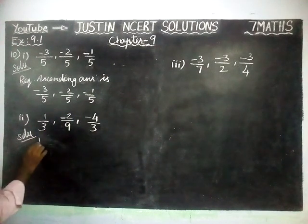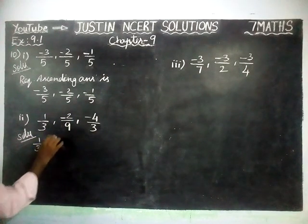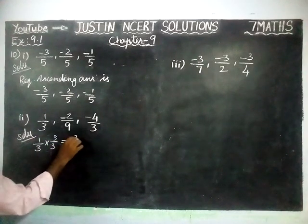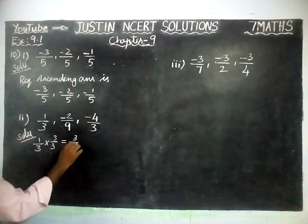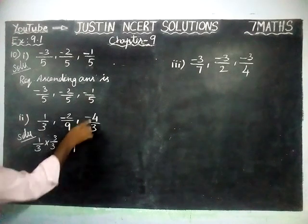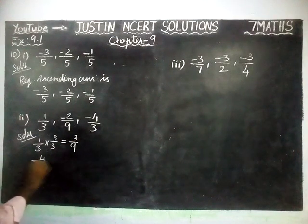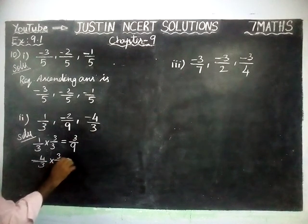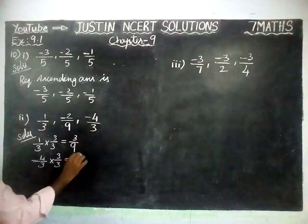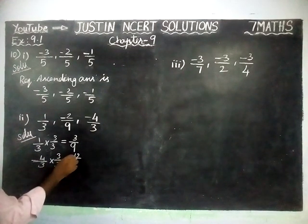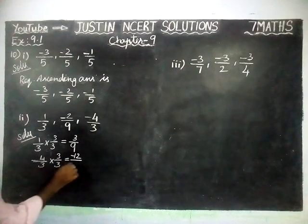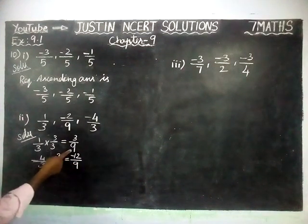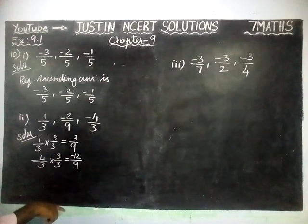Now we are going to convert. 1 by 3 multiplied by 3 by 3 gives 3 by 9. Next, minus 4 by 3 multiplied by 3 by 3 gives minus 12 by 9. And minus 1 by 3 multiplied by 3 by 3 gives minus 3 by 9. Now all the denominators are equal and we can compare them.